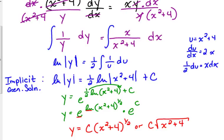You can't take the square root of x squared plus 4 because of the plus — you just have to leave it. So this is the explicit general solution.